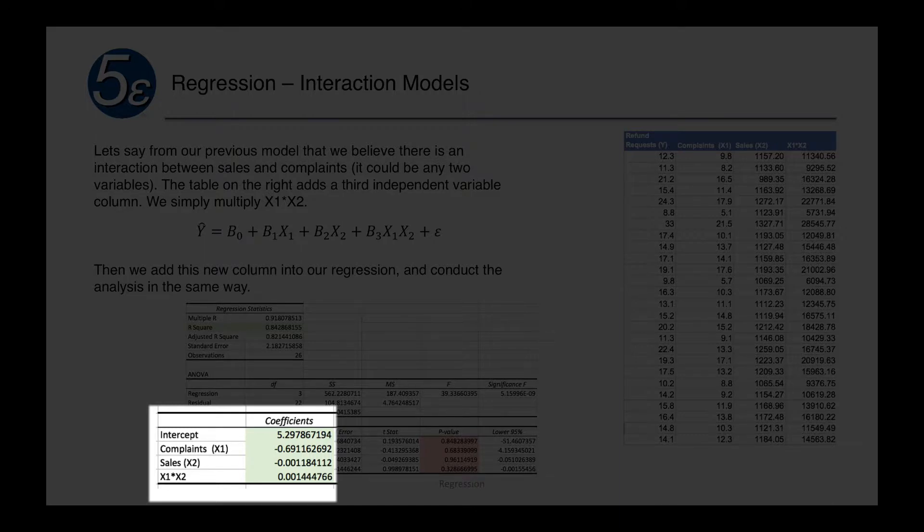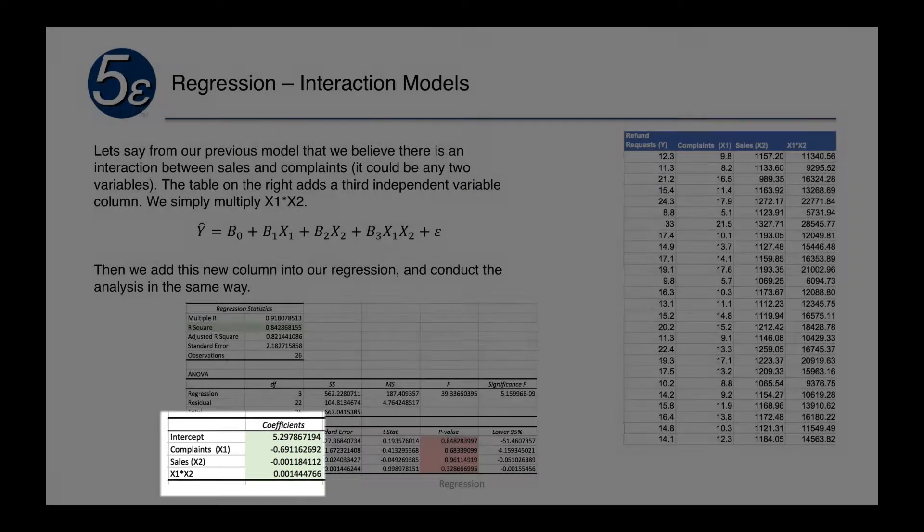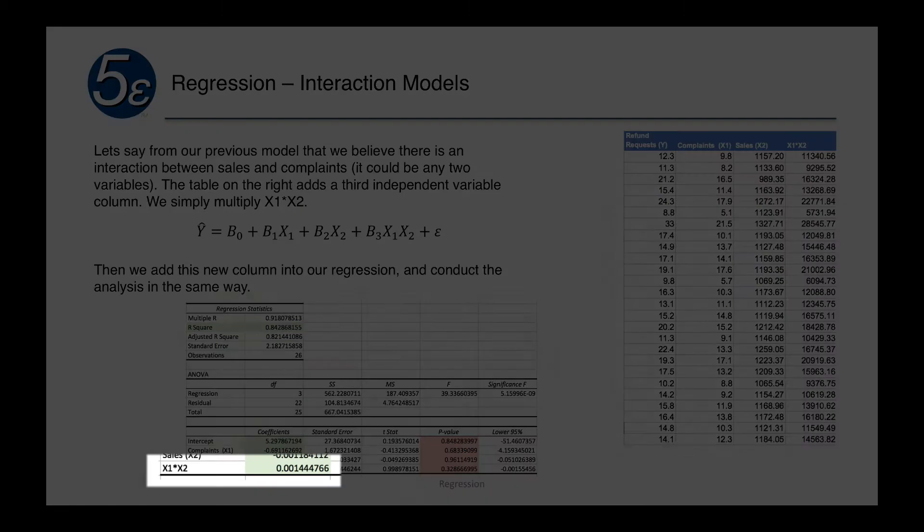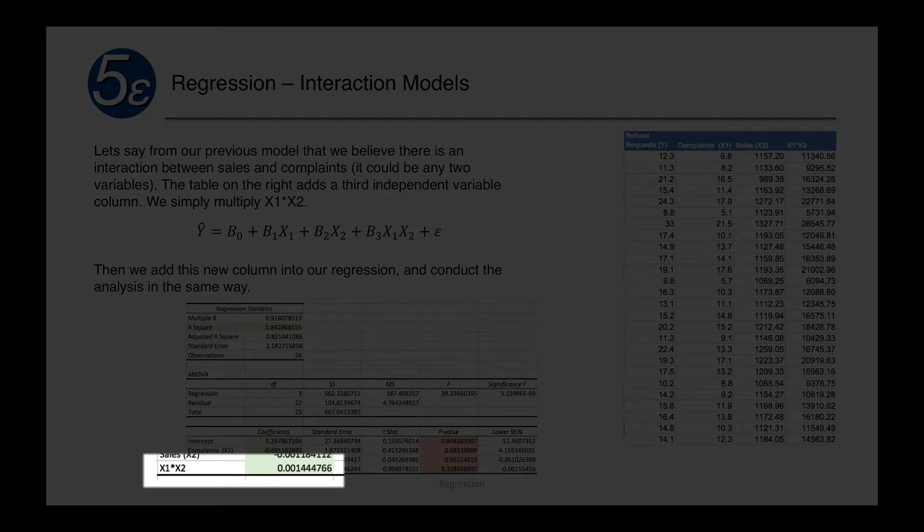As we see down below, we get a number of coefficients for the intercept, for the complaints, for the sales, and the x1*x2 variable. Our interpretation is exactly the same. For the interaction term, the coefficient indicates that we would multiply the product of the two variables by 0.0014.